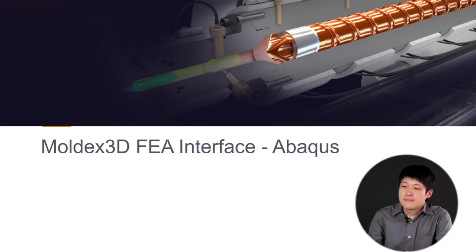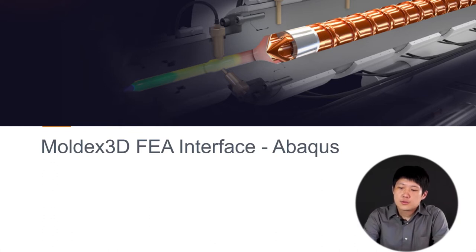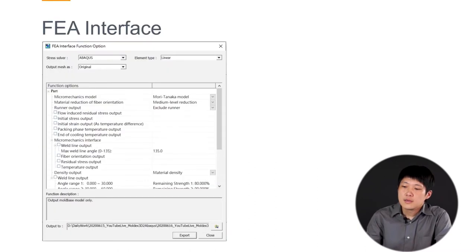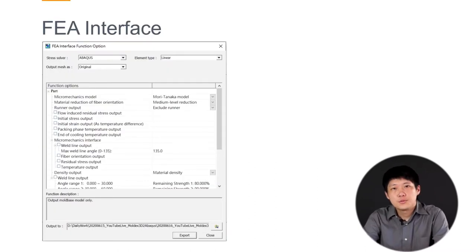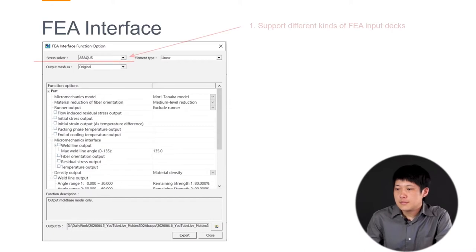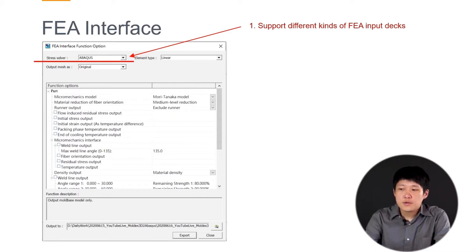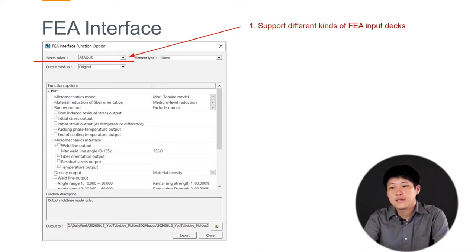Now we would like to talk about how to export these features from Moldex3D. In Moldex3D, we offer a tool called the FEA Interface. We can use this tool to export the features from Moldex3D. Here is how the tool looks.